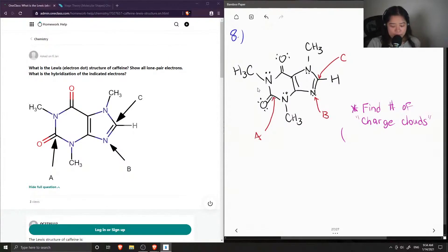So what I mean by charge cloud—this can either be a lone pair or it could be a bond pair or like a bonded atom.